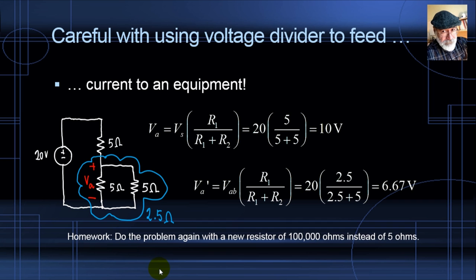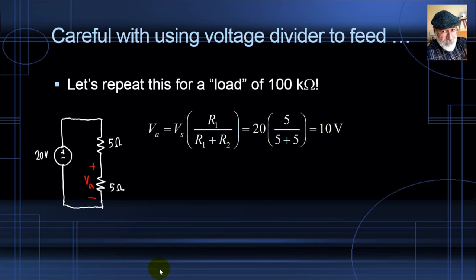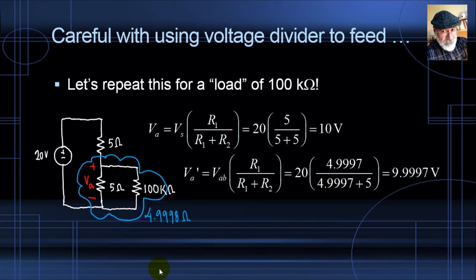Taking the same voltage divider with VA = 10 volts and connecting a device with an equivalent resistance of 100 kilohms (100,000 ohms), the parallel combination of 5 ohms and 100 kΩ is 4.9998 ohms — almost 5. The voltage divider then yields 9.9997 volts, approximately 10 volts. For very large equivalent resistance devices, the voltage divider continues to operate very neatly.